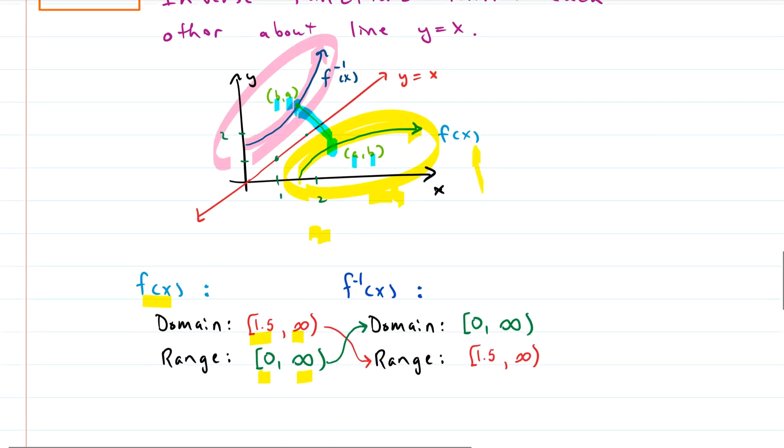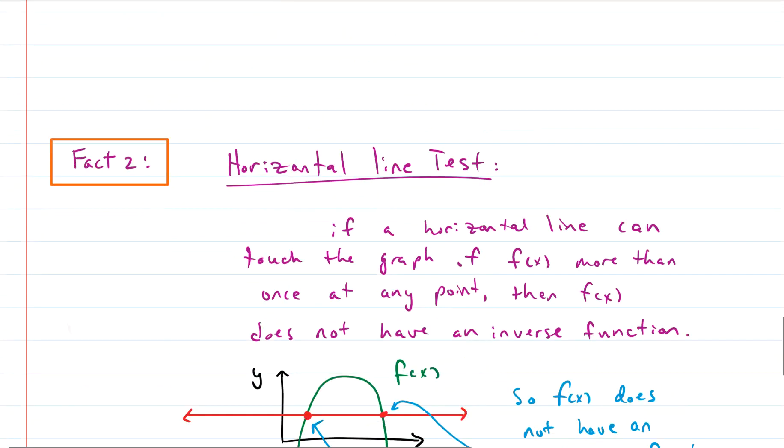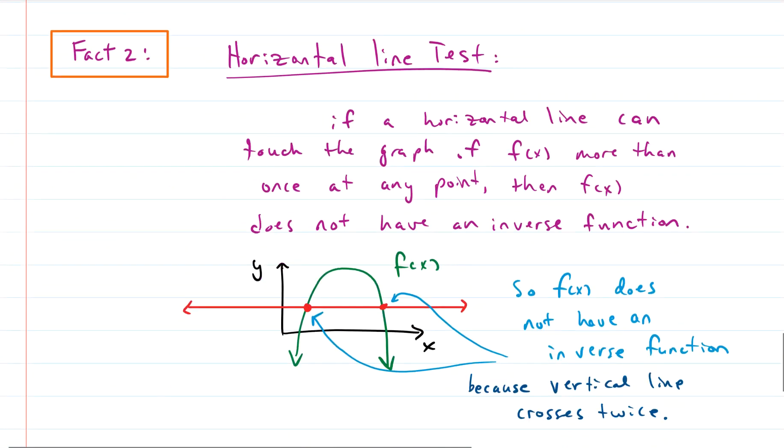Kind of fun fact about inverse functions. Second fun fact about inverse functions is the horizontal line test. So I don't know if you knew, but if you take a horizontal line, say this one right here, if you can touch the graph of a function anywhere more than once, then that function doesn't have an inverse. So because we can see we can touch twice, this graph, we have this parabola, doesn't have an inverse function. Interesting. Why is that? Why would that be?